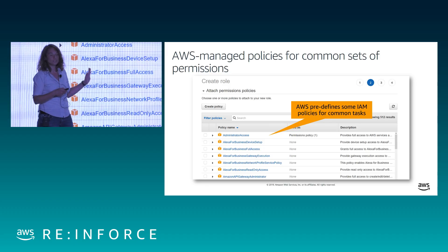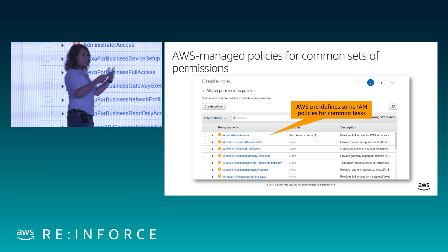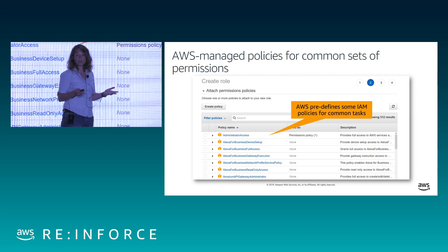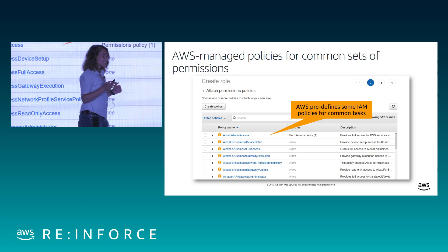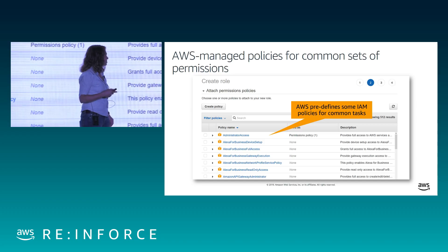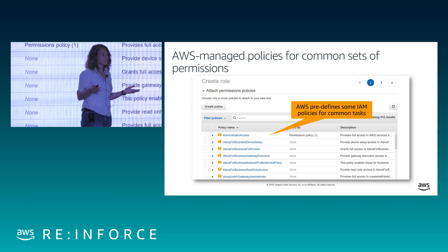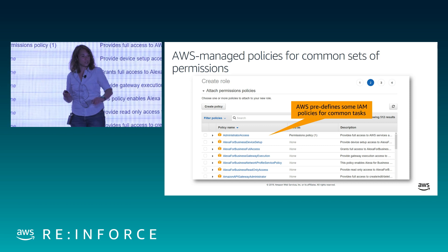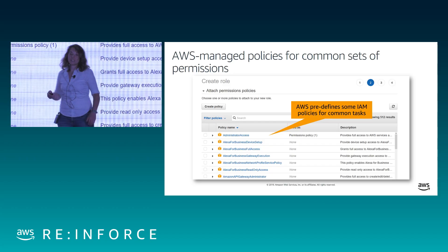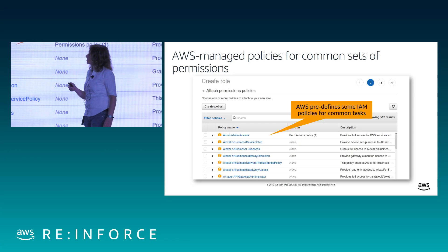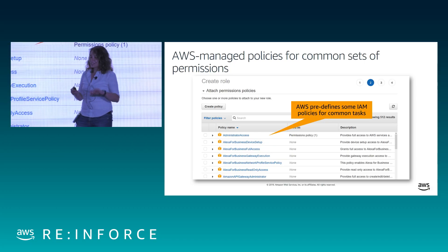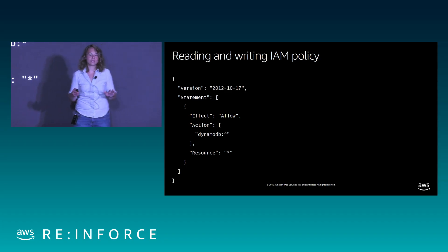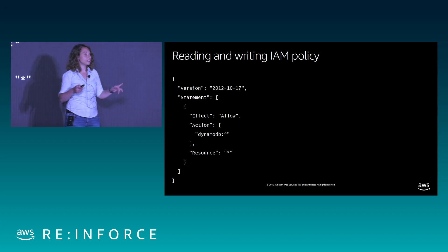We have a number of pre-canned policies in the policies pane of the IAM console. They have human readable names and are sort of self-describing. These are really useful for setting up permissions for human roles that have common sets of fairly coarse-grained actions. It's actually worth your while to look at how these policies are written to get an idea of what services do — I find that a very useful way to learn about what a service does. But a lot of the time, especially for writing your own applications, you're going to want to go finer-grained, and that means you'll need to learn how to read and write an IAM policy.